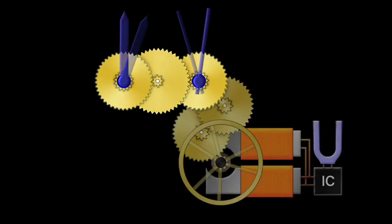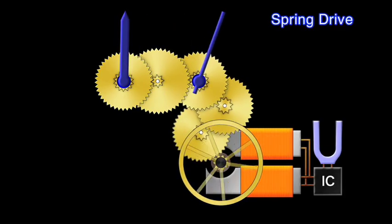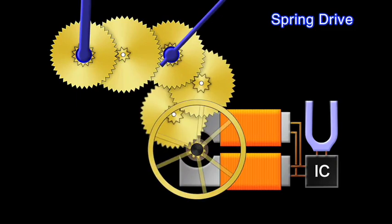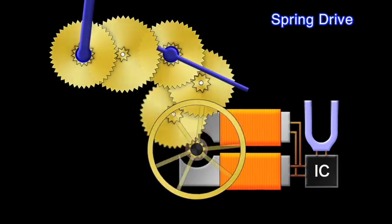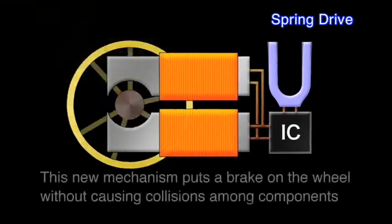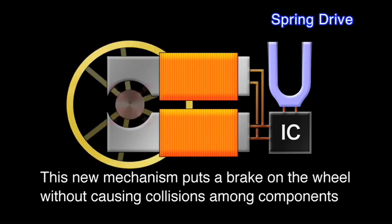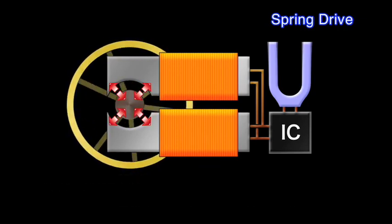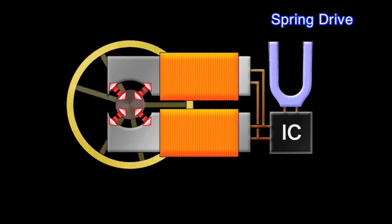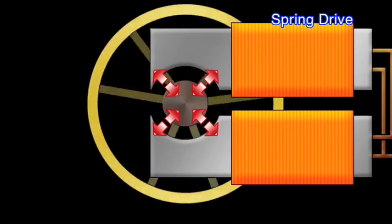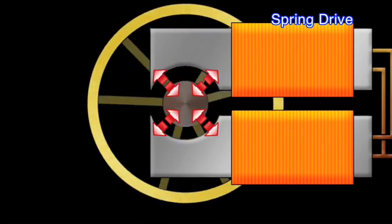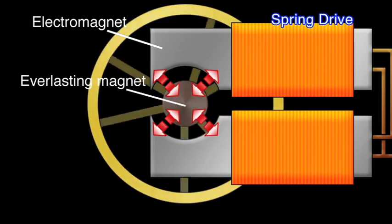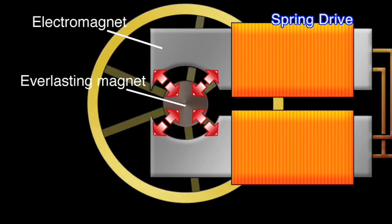To overcome this vulnerability in mechanical watches, a new mechanism was introduced in the spring drive system. This new mechanism puts a brake on the wheel without causing collisions among components. By using the magnetic force as resistance, an electromagnetic brake on the wheel could be realized.